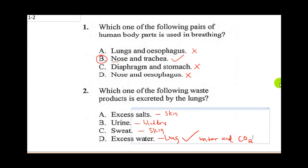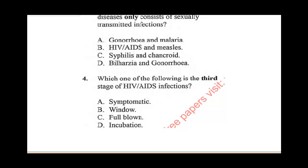Question three says: which one of the following pairs of diseases only consists of sexually transmitted infections (STDs)? Gonorrhea is an STD but malaria is not, so that is wrong. HIV is an STD but measles is not, so that is wrong. Syphilis is an STD and chancroid is also an STD, so the correct answer is C. Bilharzia is not an STD — it is caused by parasitic worms, so that option is wrong.